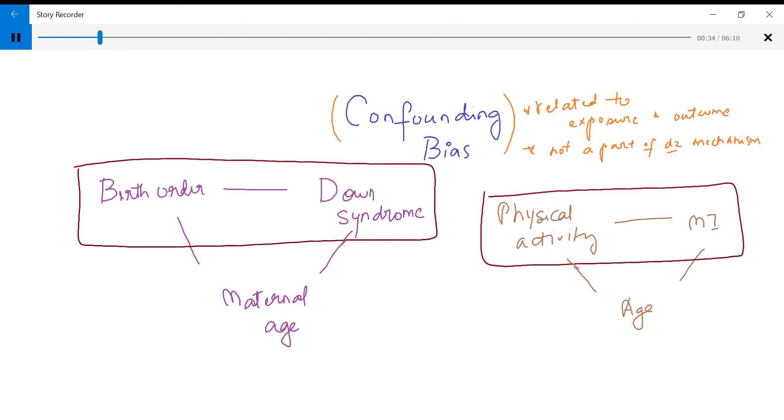And the definition of confounding bias is something that is related to both the exposure and the outcome, but it is not a part of the disease mechanism. It is very important to remember that it is not a part of the disease mechanism. I will give you an example later on. But let's first focus on its relationship to exposure and outcome and how it confuses these associations.